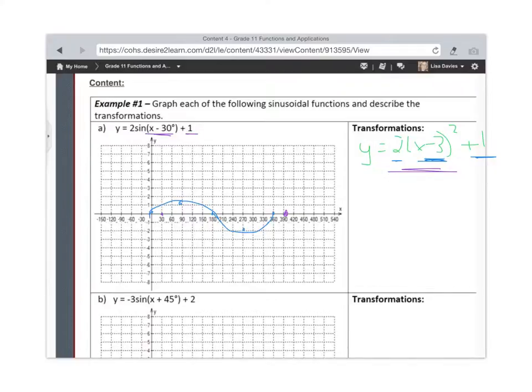And we're going to move the whole thing up 1, so we're going to take our starting point and move it up 1, and we're going to take every other point that we had graphed and we're going to move it up 1 and over by 30.